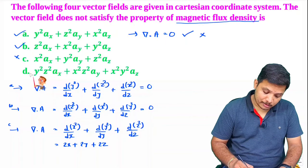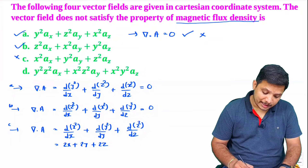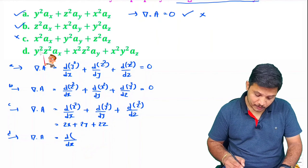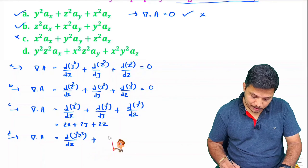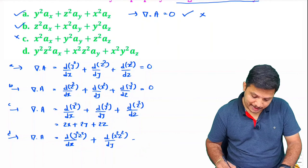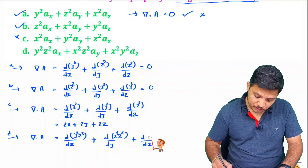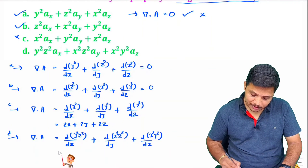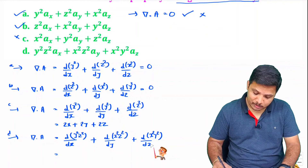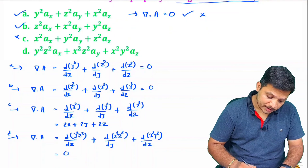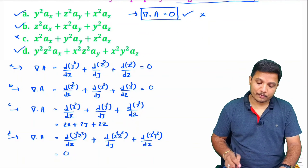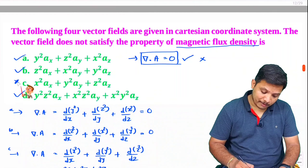Let us also check the fourth vector. Differentiating the x-component (y²z²) with respect to x, plus differentiating the y-component with respect to y, plus differentiating the z-component (x²y²) with respect to z — these are all constants with respect to their respective variables, so the divergence is zero. This vector also satisfies the property. Therefore, the correct answer — the vector that does not satisfy the property of magnetic flux density — is the third one.